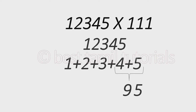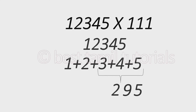We will add 3 numbers, 3 digits. First, we will add 5. Second, we will add 4 plus 5. Then we will add 3 plus 4 plus 5. 3 plus 4 plus 5 is 12. In 12, we will answer single digits — write 2.